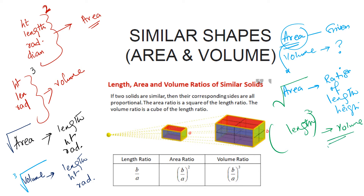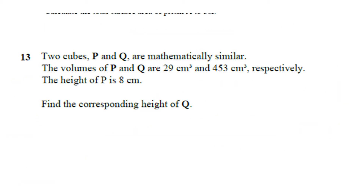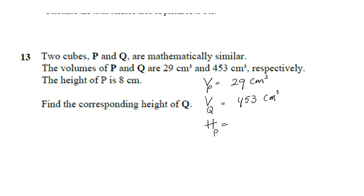This is what we have studied in previous parts. Now let us solve a few more questions. Two cubes P and Q are mathematically similar. The volumes of P and Q are 29 cm³ and 453 cm³. The height of P is given as 8 cm and you have to find out the height of Q in cm.